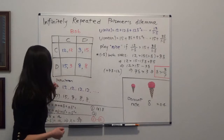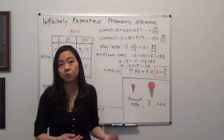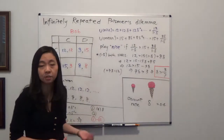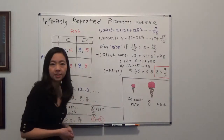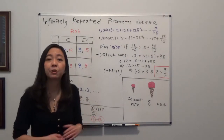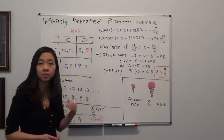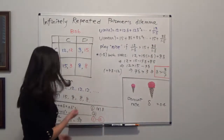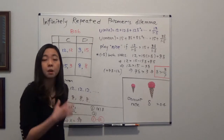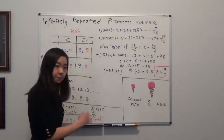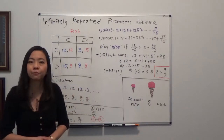If this game is infinitely repeated, it is possible for them to achieve cooperation using a trigger strategy. Here's the deal: they gather together and say, if we both cooperate in each and every period, we each get 12 every period. But if anyone defects in any period, then we both play defect forever.